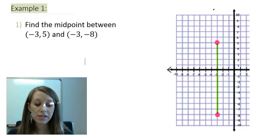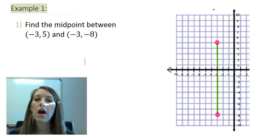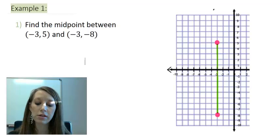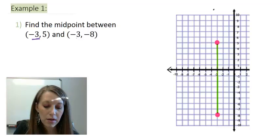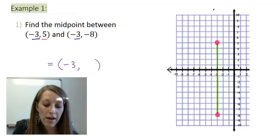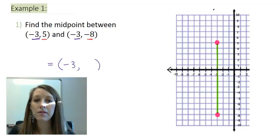Okay, this is a very simple example because these points are basically on one dimension. Since it's a straight vertical or if it was a straight horizontal line, then we only have to come up with the middle of that respective dimension. So here, since my x values are both negative 3, I know that my new x value will also be negative 3. All I have to do is come up with the middle point between my two y values of 5 and negative 8.